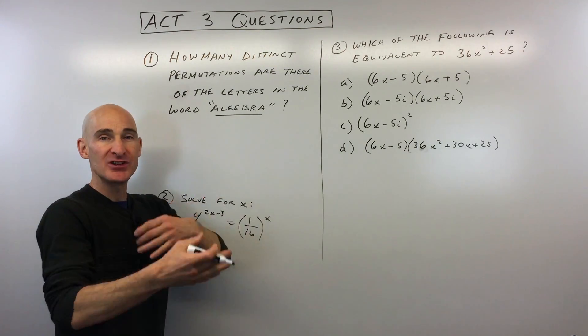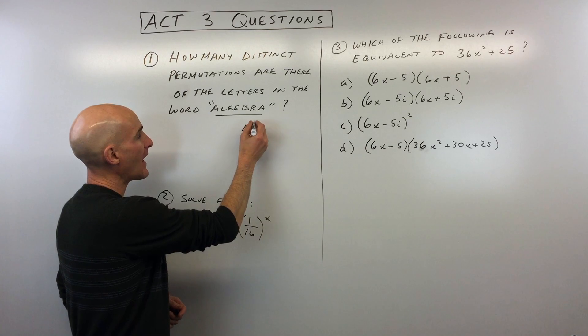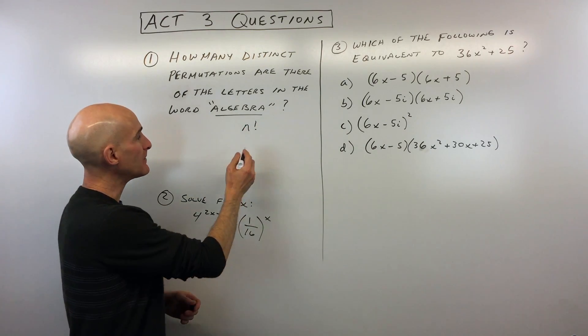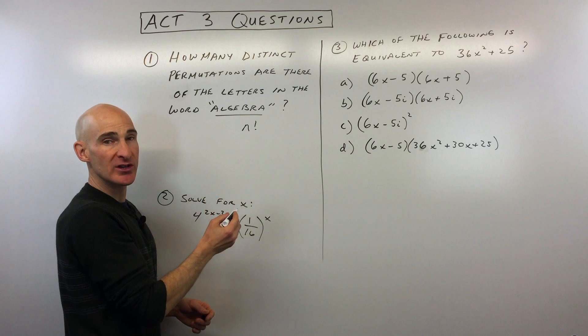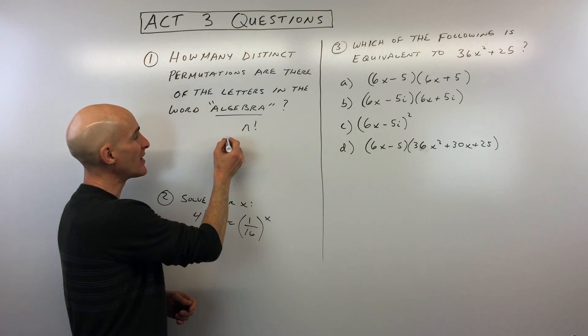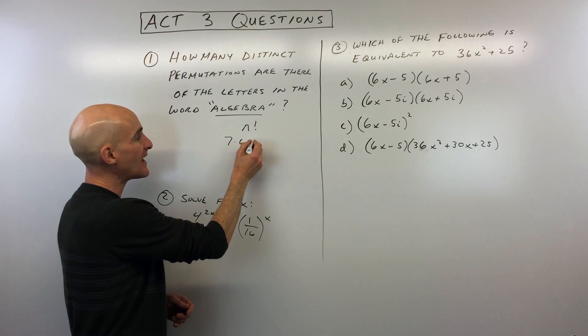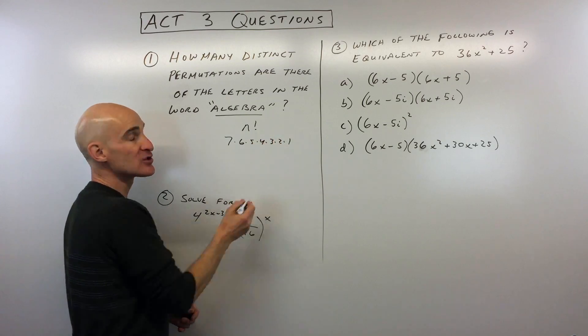Now when you order objects, you can think about this formula n factorial. And what the factorial means is that you take whatever this n value is, which in this case it's seven since there's seven letters, and you multiply down to one.